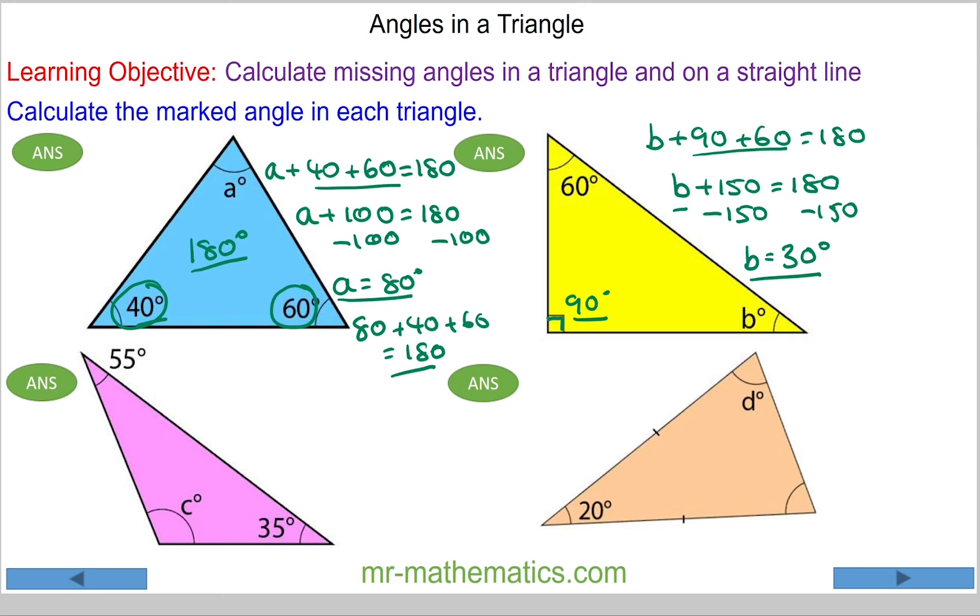For angle c, we know c plus the other two angles, 35 and 55, will equal 180. 35 add 55 is 90 degrees, so c plus 90 degrees must equal 180. Take away the 90 from both sides and c will equal 90 degrees.